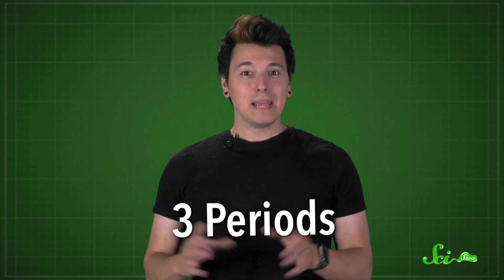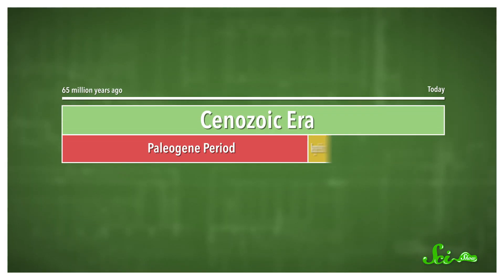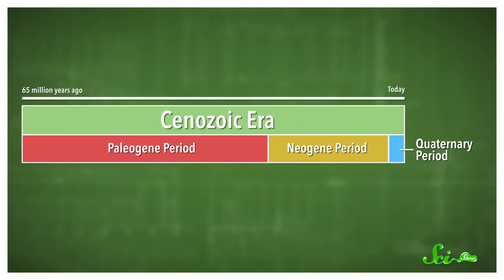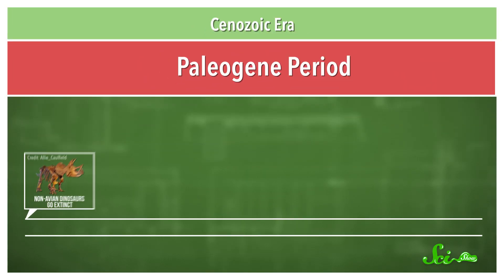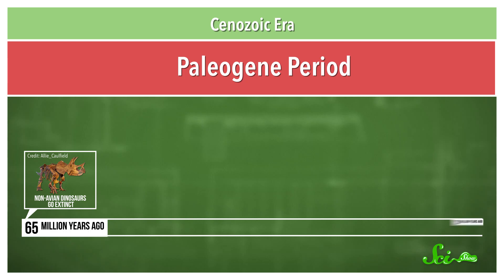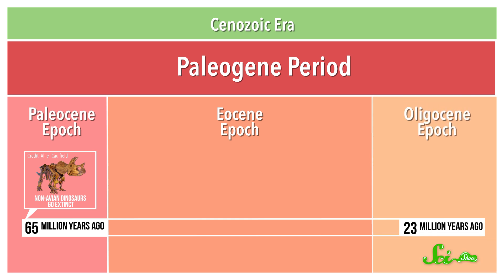The Cenozoic is divided into three periods. The names of the periods have been switched up a bit recently, but these days the era is divided into the Paleogene, Neogene, and Quaternary Periods. Each period is subdivided into even smaller units of time called epochs. The Paleogene Period covers the time from the extinction of the dinosaurs 65 million years ago to about 23 million years ago, and it's divided into the Paleocene, Eocene, and Oligocene epochs.